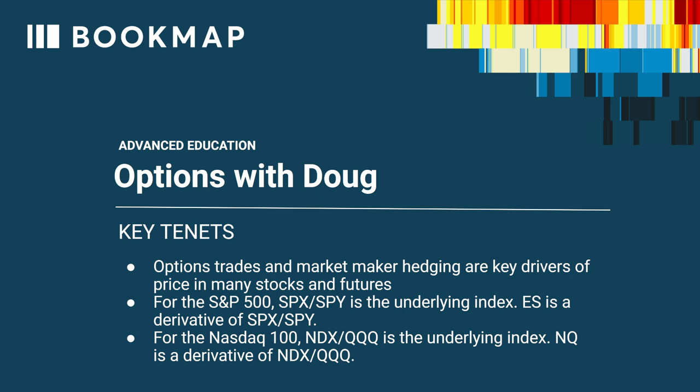For the S&P 500, SPX is the underlying index. SPY is the ETF version of that index. The ES futures contract is a derivative of SPX. When traders buy and sell puts and calls in SPX and SPY, market makers take the opposite side of those trades and hedge their delta exposure with ES futures. For the NASDAQ 100, NDX is the underlying index. QQQ is the much more liquid ETF version. The NQ futures contract is a derivative of NDX, and when traders buy and sell puts and calls in NDX and QQQ, market makers hedge their delta exposure with NQ futures.